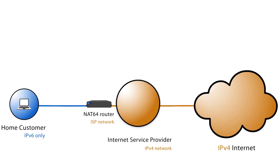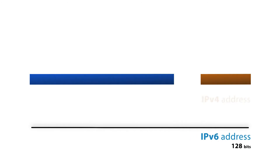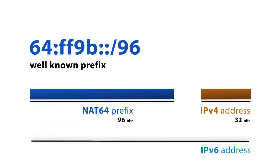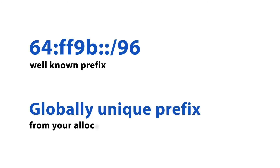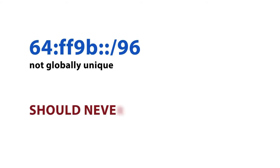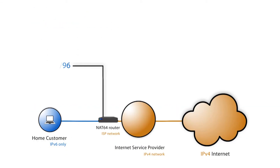Imagine you're an ISP and you want to implement NAT64. To map an IPv4 address into an IPv6 address, you need a /96 prefix. This is because an IPv6 address is 128 bits and an IPv4 address is 32 bits, leaving 96 bits to map the IPv4 address in the IPv6 address. You can either choose to use a well-known prefix reserved for NAT64, or a globally unique /96 out of your organisation's network allocation. The well-known prefix is not globally unique and should never be announced to the internet — it should only be used if the translation box is accessed locally.